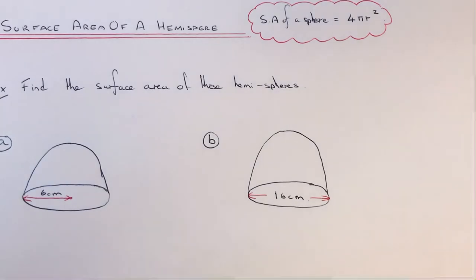So now I'm going to show you how to find the surface area of a hemisphere. The first thing is that you need to know that the surface area is the area of all the faces on the 3D shape. Now a hemisphere is half a sphere.